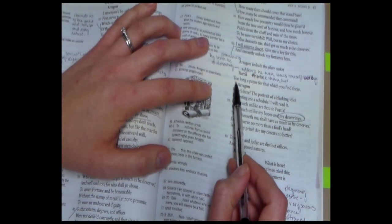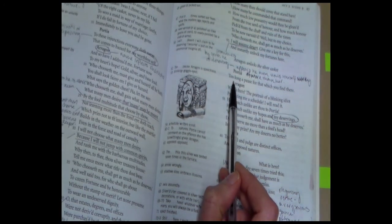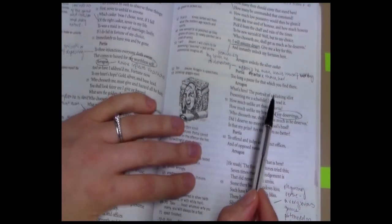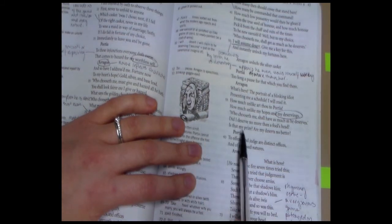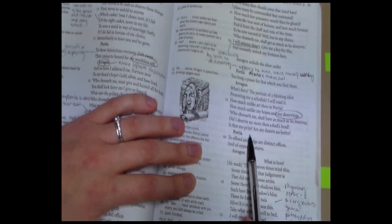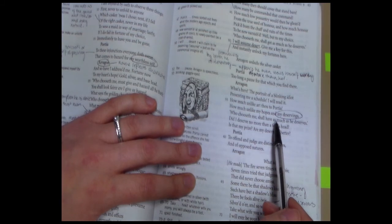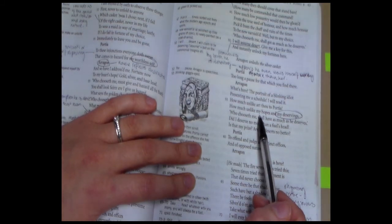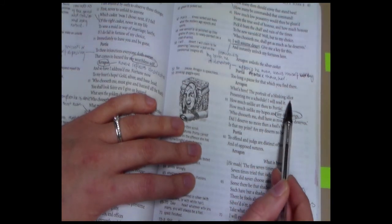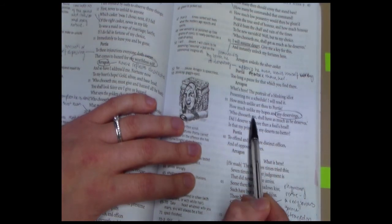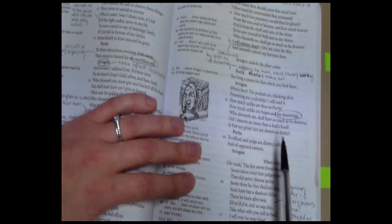Now, Portia says that there is a long pause when he opens the chest, which again builds the drama on the stage. You've got to remember that this is being performed so he would stand there quietly for a moment. And Aragon is shocked. And we can see that through his next speech where we see what's here. And then did I deserve no more than a fool's head? Is that my prize? Are my desserts no better? So there are four questions here. That is because he believes that he should win her. And yet when he opens the casket, there is nothing more than the portrait of a blinking idiot. So there isn't a portrait of Portia. He says, how unlike my hopes and my deservings. So he's really very shocked that he hasn't won her.